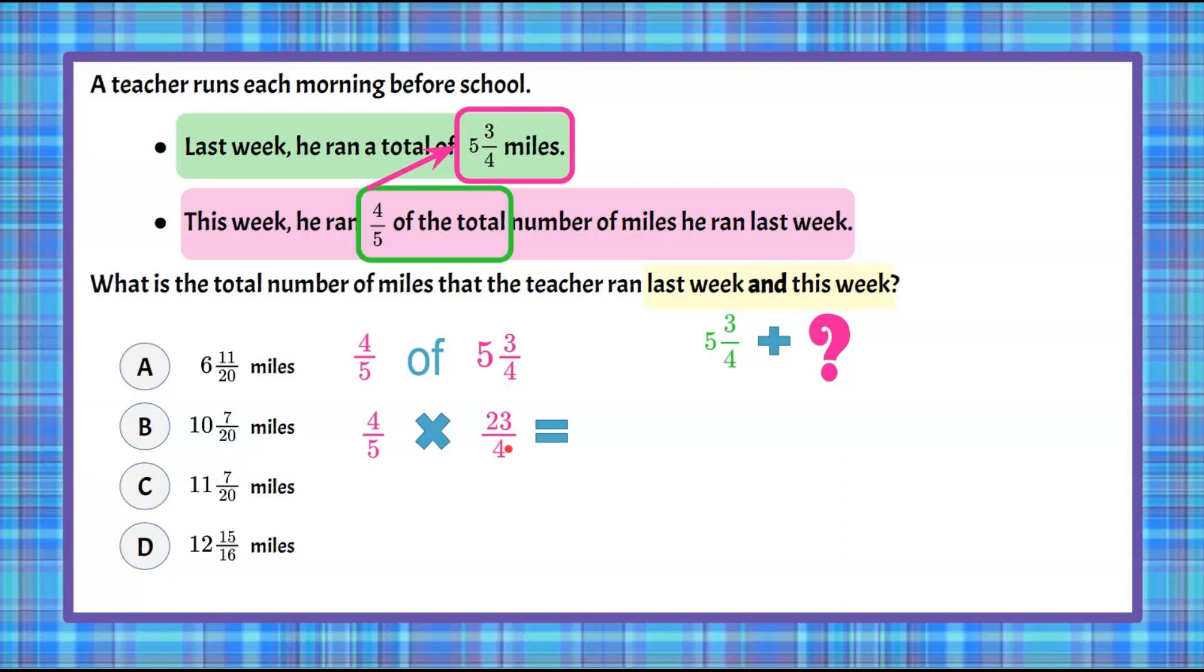I'm going to simplify any common factors between the numerator and denominators before I multiply. Both the numerator and the denominator have a factor of 4. 4 divided by 4 is 1, and anything times 1 is itself. So 1 times 23 is 23, and 5 times that 1 is 5. 23/5 is in simplest form. So we know that he ran 23/5 miles this week. So that is 4/5 of 5 3/4.